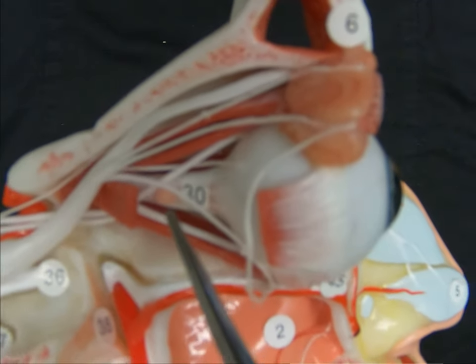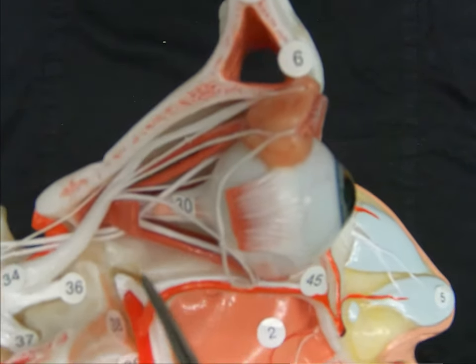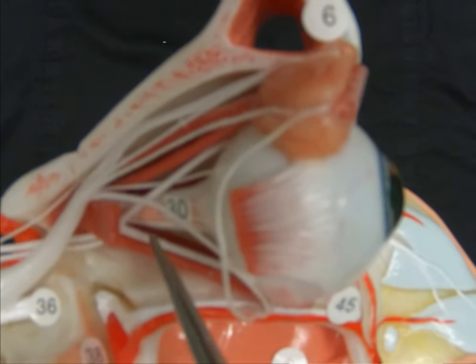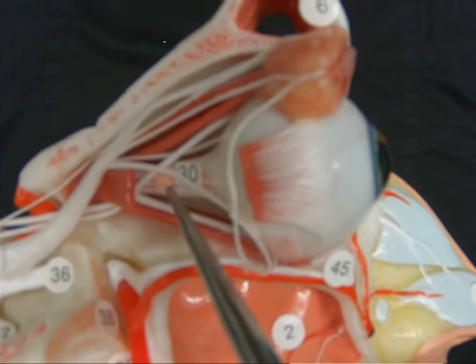We can then see them going to the respective muscles. And in this case, we can also see the ciliary ganglion, which will receive parasympathetics from cranial nerve 3,